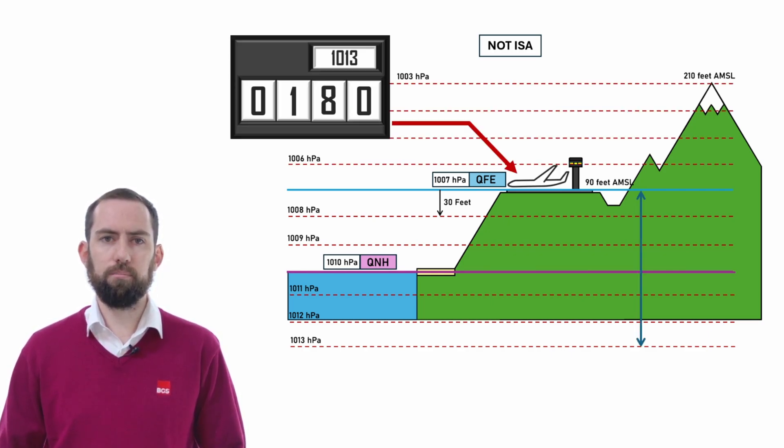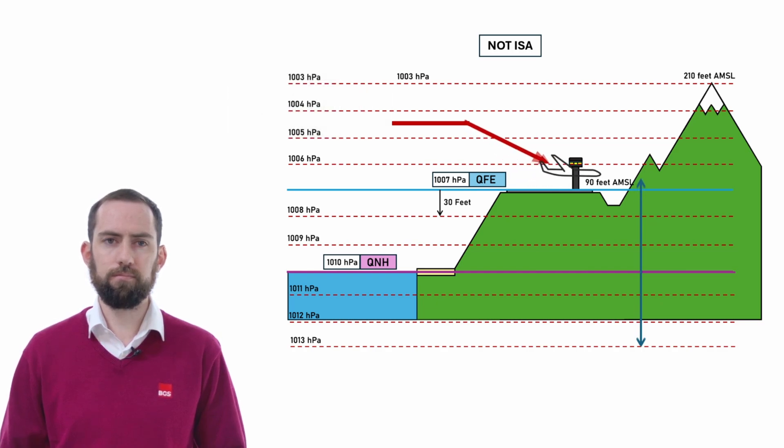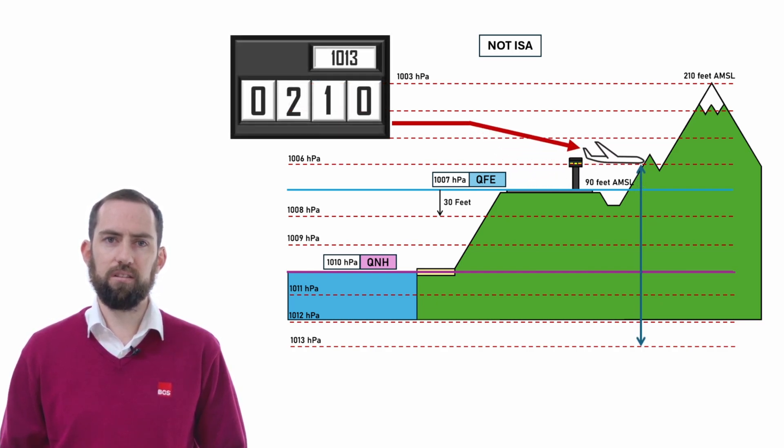With an aircraft parked at the airfield, imagine if we left 1013 on the subscale. We would be telling our altimeter that we wanted it to read 0 at the 1013 level, which in this scenario is now way down at the bottom of the diagram. Your altimeter is detecting 1007 at the airfield, and hence it is detecting a difference of 6 hectopascals. If we multiply 6 by 30, then the altimeter would be reading 180 feet.